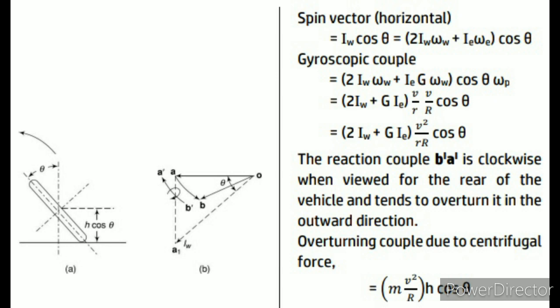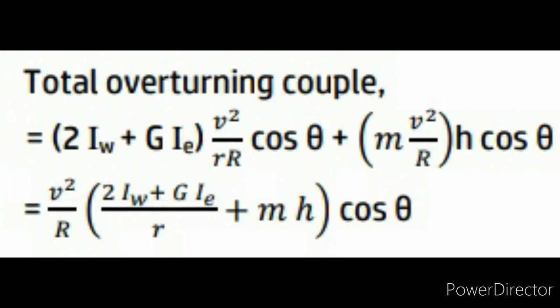That simplifies to (2Iw + G·Ie) into V² / (r·R) into cos theta. The reaction couple B'A' is clockwise when viewed from the rear of the vehicle and tends to overturn it in the outward direction. The overturning couple due to centrifugal force is equal to M into V²/R into H·cos theta. Therefore, the total overturning couple equals (2Iw + G·Ie)·V²/(r·R)·cos theta plus M·V²/R·H·cos theta.